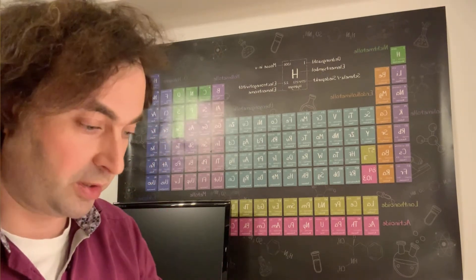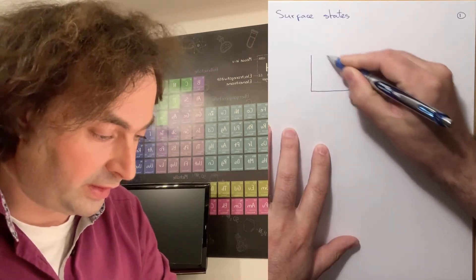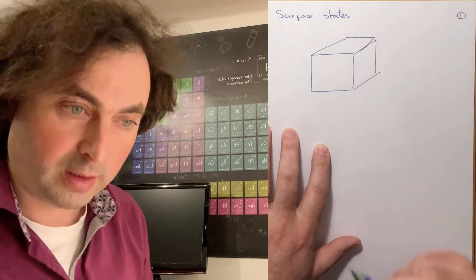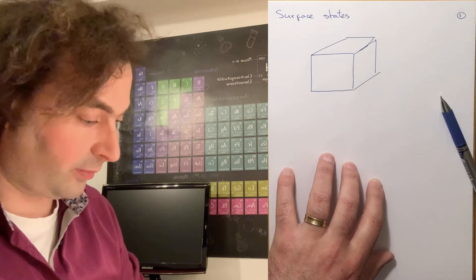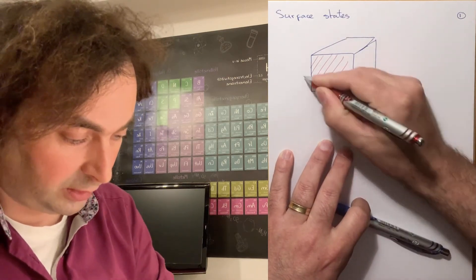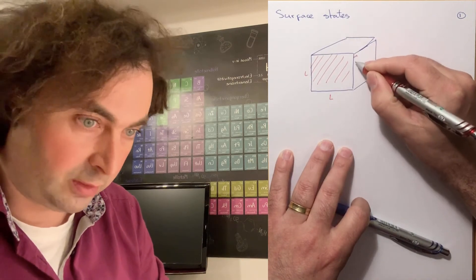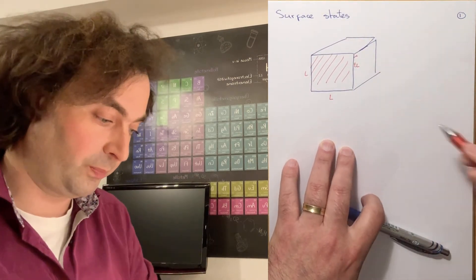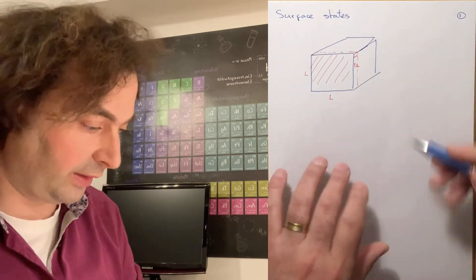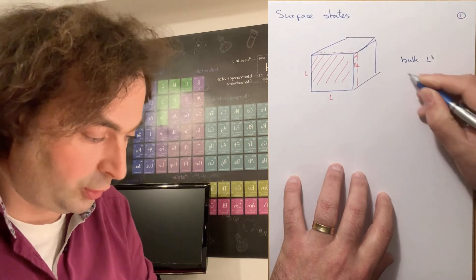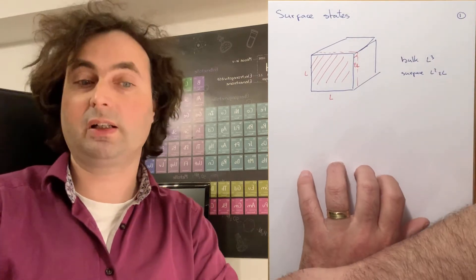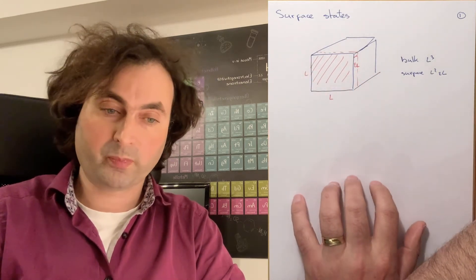Nonetheless, close to the surface the material properties will be different. The reason that we can neglect the surface for most of our bulk properties is that the volume of the states close to the surface is for a cubic crystal given by L squared times epsilon L. The bulk, on the other hand, has a volume of L cubed. When L is large, there is a negligible influence of your surface on the bulk properties.